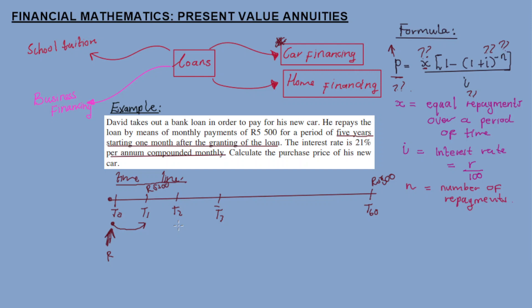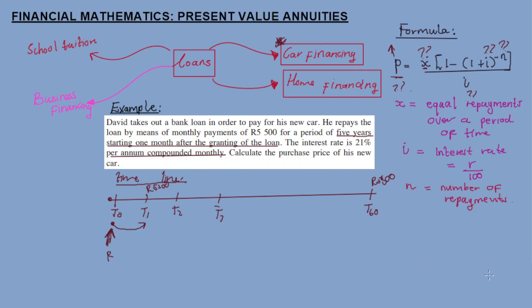There might be a situation where you take out a loan but keep a certain amount upfront. For example, if a bank lends you one thousand rand but takes fifty rand as an upfront fee, then when you actually receive the money it's nine hundred and fifty rand. In such a case you would subtract that amount. But in our example there was no upfront amount.